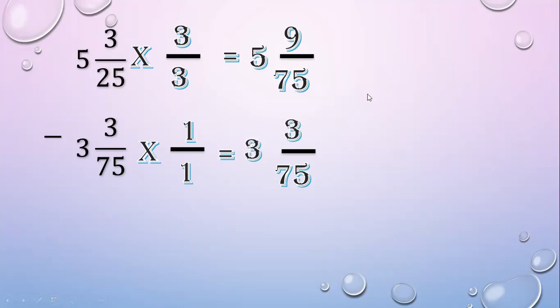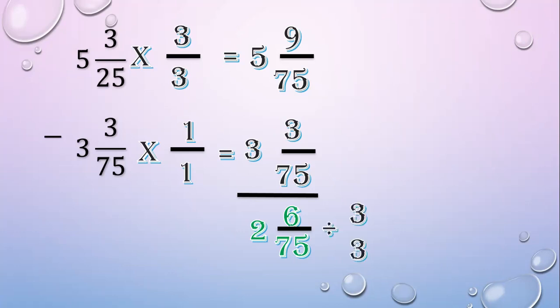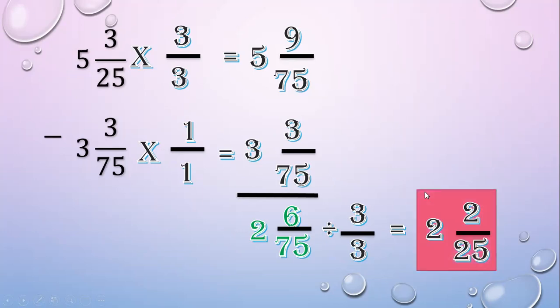Next, subtract the whole numbers: 5 minus 3 equals 2. Subtract the numerators: 9 minus 3 equals 6. Copy the denominator: 75. Then express the answer in lowest terms. 6 and 75 have a common factor, so divide by 3 over 3. Copy the whole number 2. 6 divided by 3 equals 2; 75 divided by 3 equals 25. The final answer is 2 and 2 over 25.